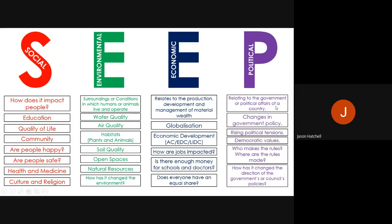Finally, political impacts and characteristics are about government, politics and changes in government policy and decision-making. You might have rising political tensions within a nation as a political impact. We're also talking about democratic values — the difference between a democratic country where people vote for their government and a dictatorship where a dictator is in charge. We also consider who makes rules and where they are made, as well as the direction a local council or government takes in terms of policy.